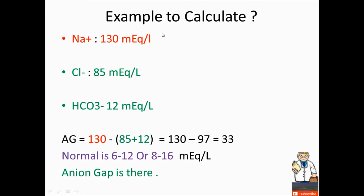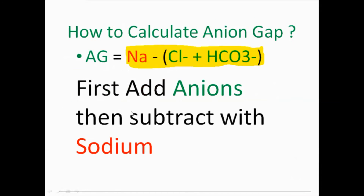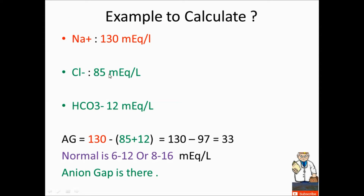Now an example to calculate. Suppose you get a case scenario or vignette about acid-base disturbance and you have sodium of 130, chloride of 85, and bicarbonate of 12. You have to check the anion gap — for example, if there are questions about anion gap metabolic acidosis.